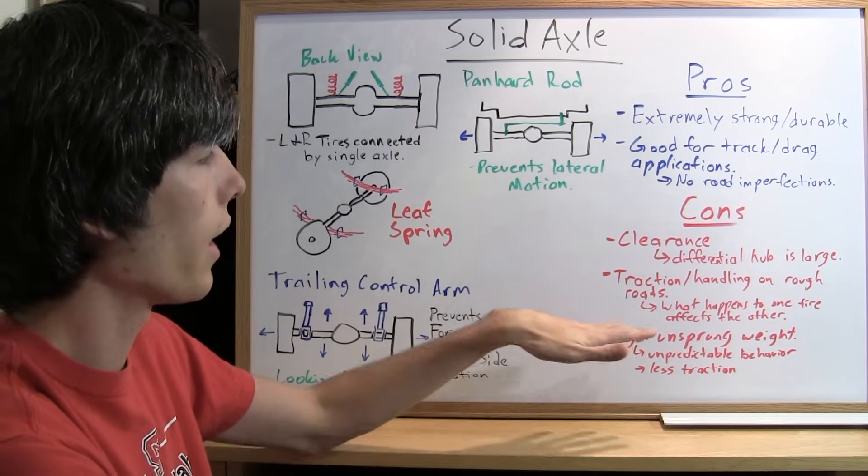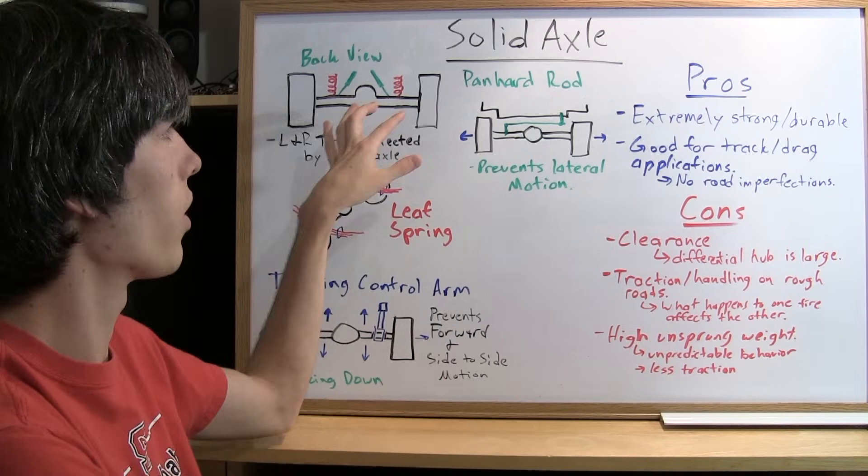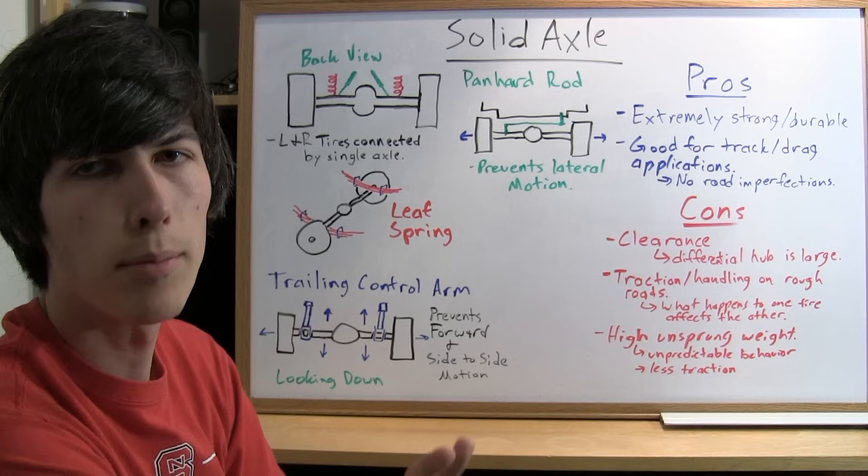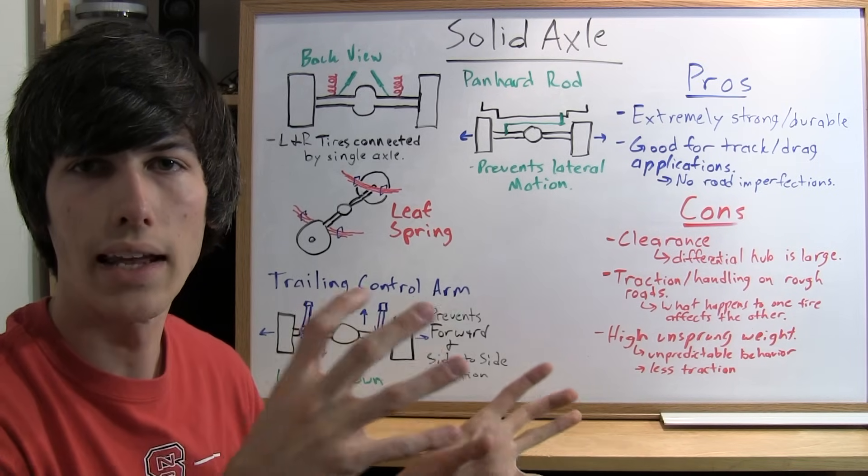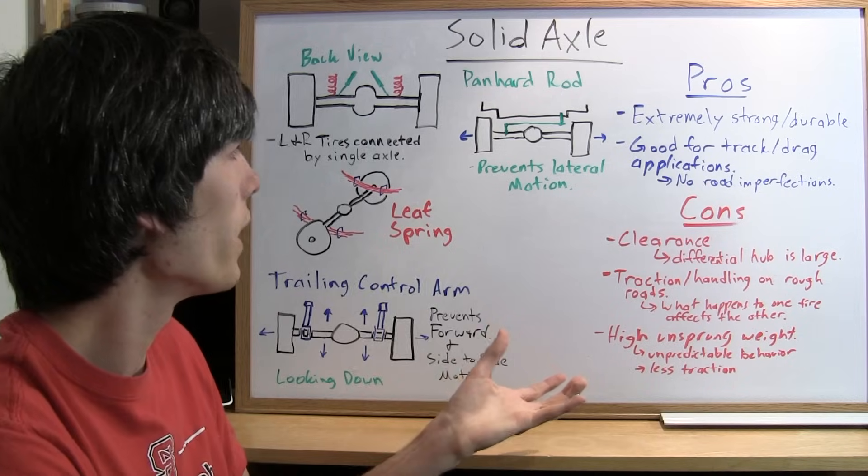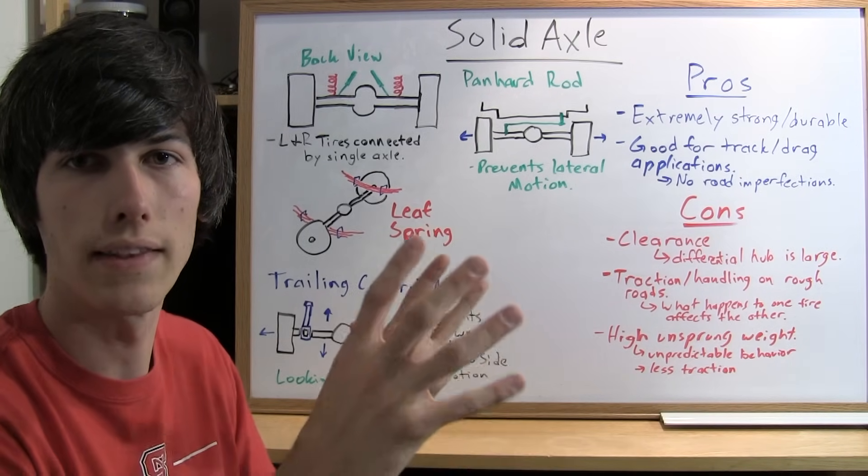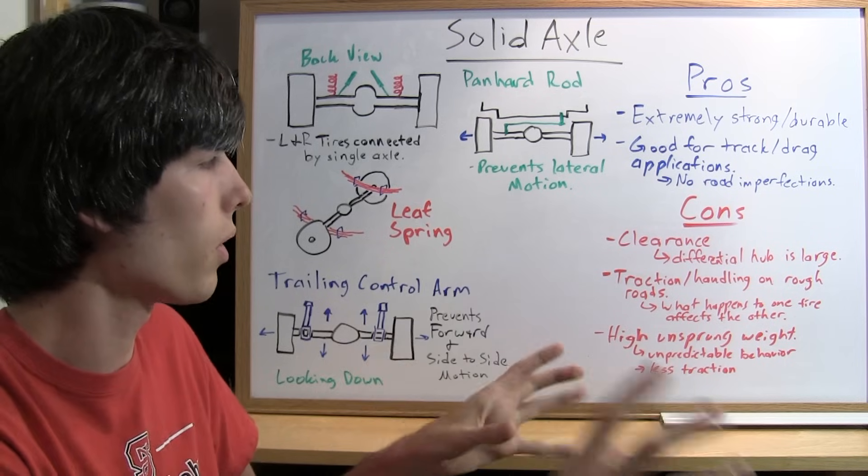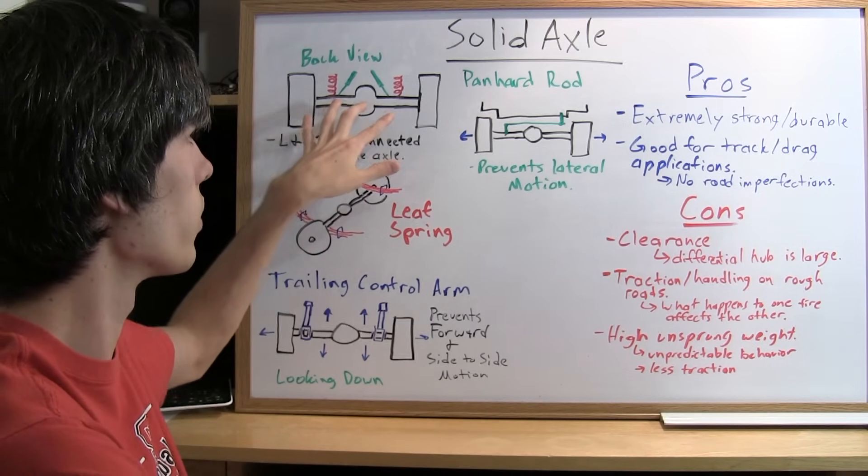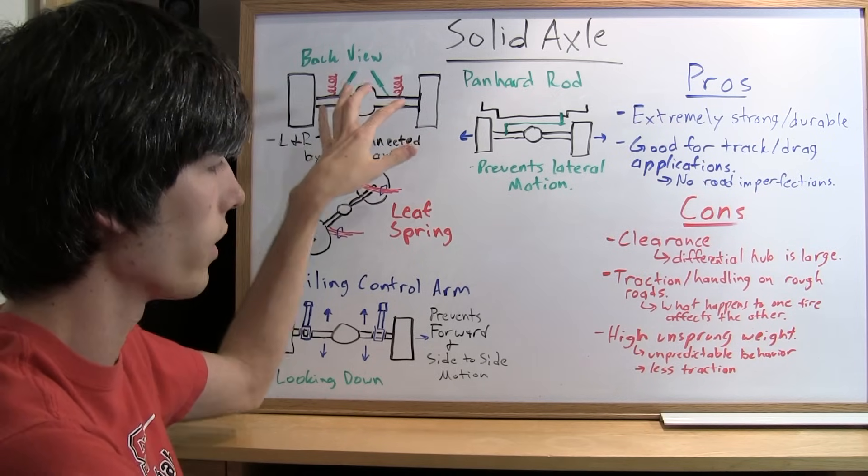Finally, high unsprung weight. These solid axles are very heavy, and they might not weigh as much as putting in an independent rear suspension, but the difference would be that that mass would be sprung weight, whereas this solid axle is unsprung mass and it's very heavy.